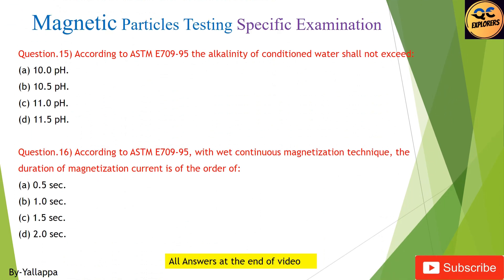Question 15: According to ASTM E709-95, the alkalinity of conditioned water shall not exceed: (A) 10.0 pH; (B) 10.5 pH; (C) 11.0 pH; (D) 11.5 pH.